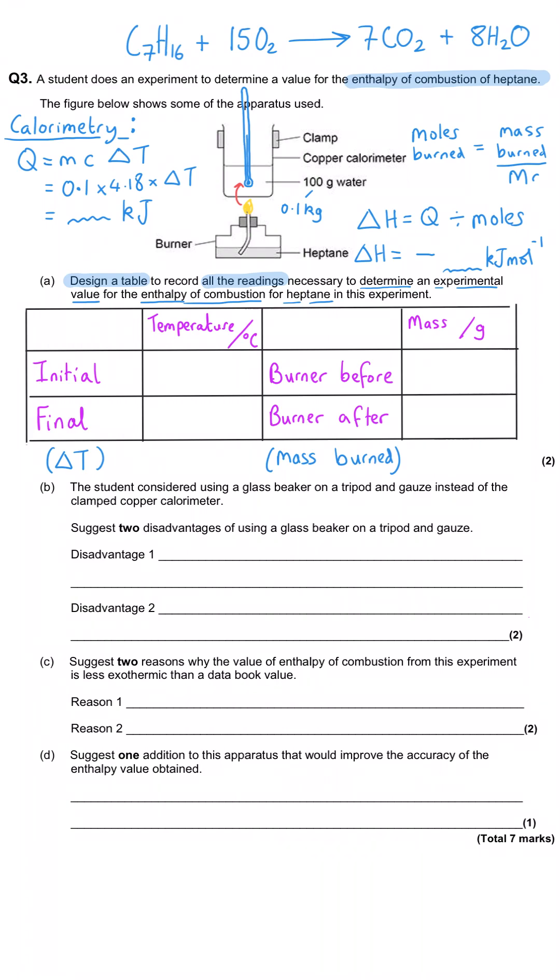In part b we're told that the student considered using a glass beaker on a tripod and gauze instead of the clamped copper calorimeter suggests two disadvantages of using a glass beaker on a tripod and gauze. So we're making a comparison here so we need to make sure that we use comparative language.